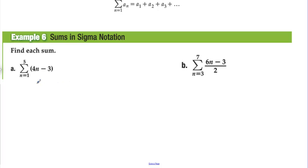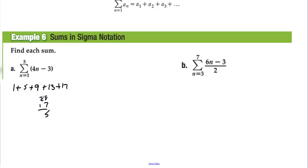Find each sum. We want to sum 4n minus 3 for n equals 1 to 5, so we plug in 1 through 5. Plugging in 1: 4 minus 3 equals 1. Plugging in 2: 8 minus 3 equals 5. Plugging in 3: 12 minus 3 equals 9. Plugging in 4: 16 minus 3 equals 13. Plugging in 5: 20 minus 3 equals 17. The sum is 1 plus 5 plus 9 plus 13 plus 17 equals 45.